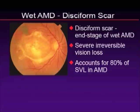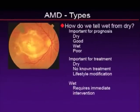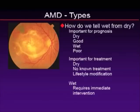If you don't treat wet macular degeneration, the natural history is very well known. You end up with a complete discoform scar, which is severe irreversible vision loss, accounting for about 80% of severe vision loss in macular degeneration. It's important to tell dry from wet because it informs prognosis and treatment. Dry macular degeneration generally has a good prognosis, while wet has a very poor prognosis. For dry, there is no cure — we talk about lifestyle modification and eye vitamins. Wet macular, on the other hand, requires immediate intervention and is usually an emergency.